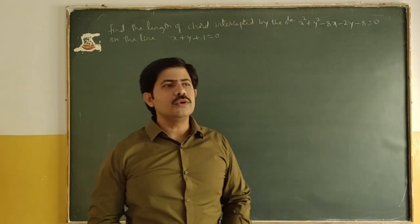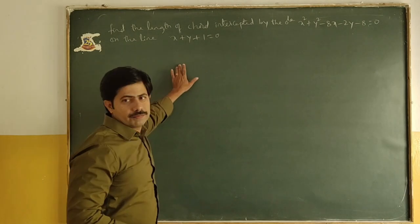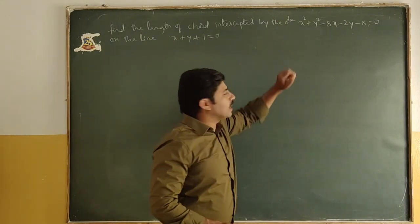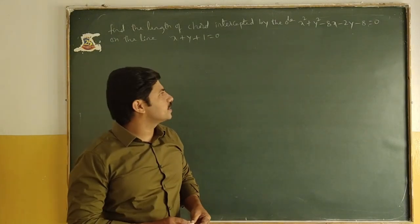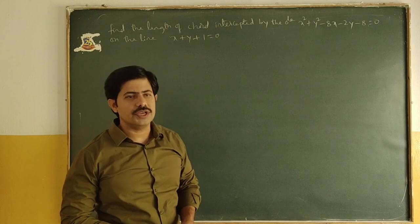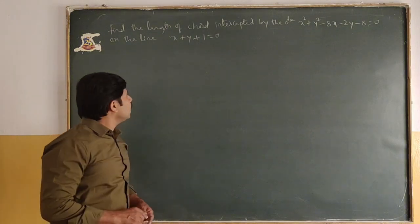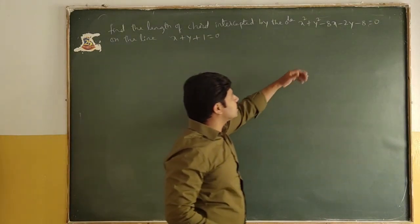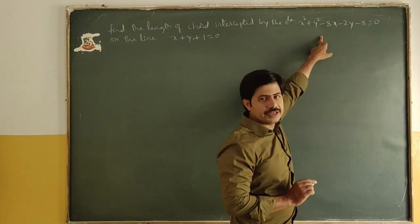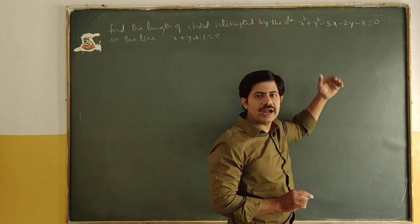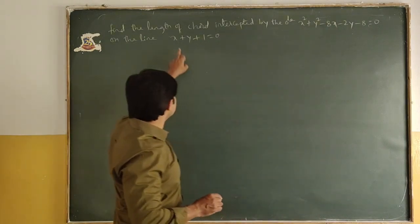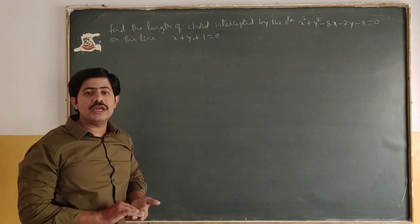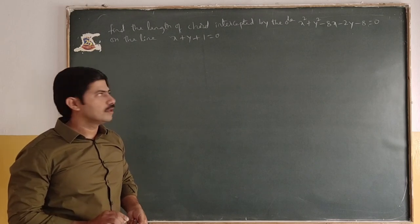Try a similar problem: find the length of chord intercepted by the circle x² + y² - 8x - 2y - 8 = 0 on the line x + y + 1 = 0. From the equation of circle find center and radius; from the chord equation find perpendicular distance d. Try this problem.